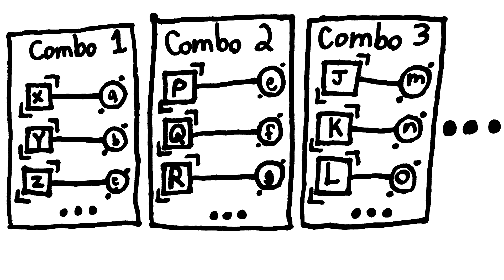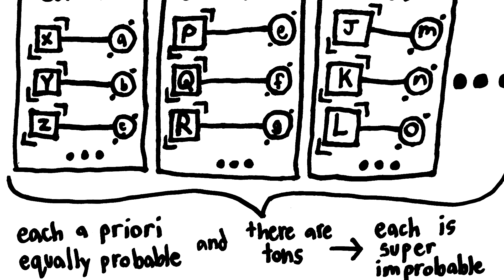Now, one combination of these psychophysical laws is going to end up accurately reflecting reality. And using the principle of indifference, we can conclude that any combination of these psychophysical laws is a priori equally probable, because we don't have any a priori reason to expect one combination rather than another. Since there are so many psychophysical laws, there is an unimaginably large number of combinations of psychophysical laws.